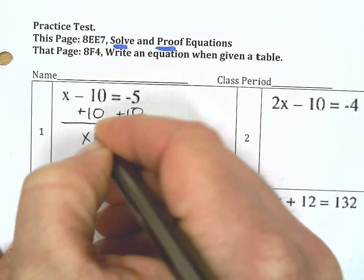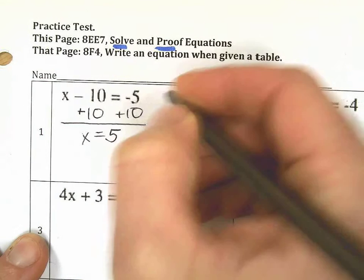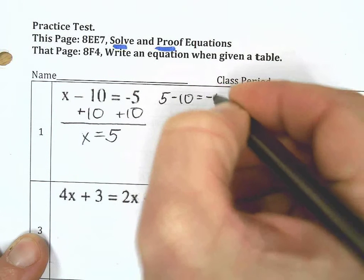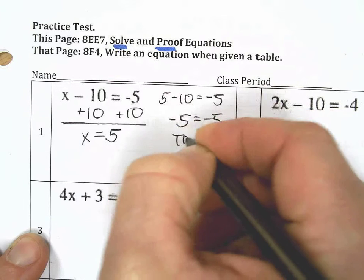I'm going to add 10 to both sides. I get x equals 5. Proof: 5 minus 10 equals negative 5, negative 5 on both sides. We're looking for the same answer on both sides to make the proof true. Okay, there's the first one.